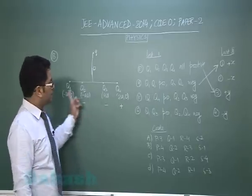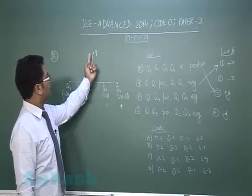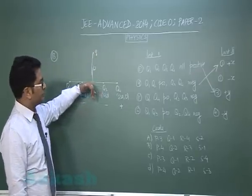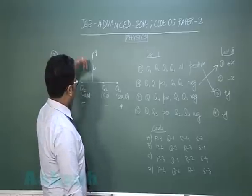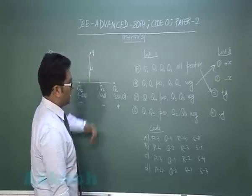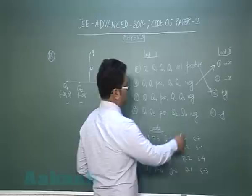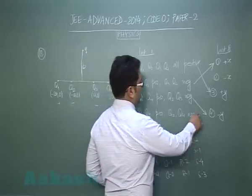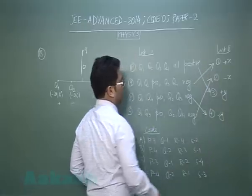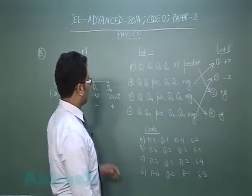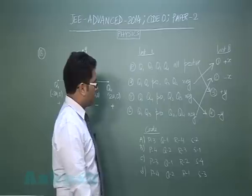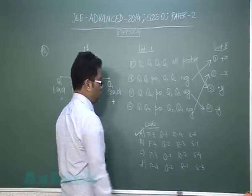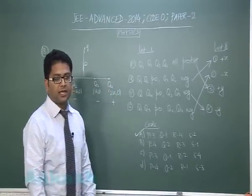In that situation, these two will give field in the upward direction, these two will give field in the downward direction, and the resultant field would be in the downward direction. So the force on a positive charge would be in the same way. The last option will go with option number 2. Finally, P3, Q1, R4, S2 will lead us to code A.